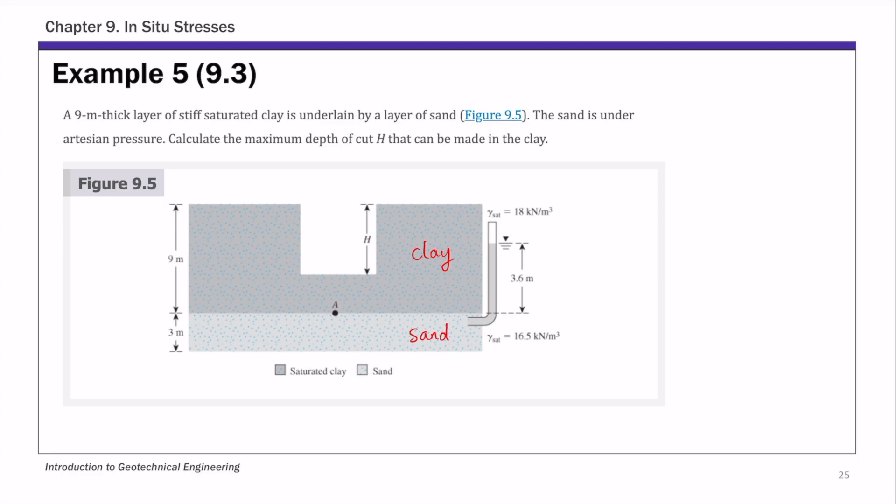And this is something we discussed in the past. The sand is under what we call artesian pressure, artesian condition. So you have basically an impermeable layer pressing a permeable layer. The pore pressure within that sand layer is going to be higher than hydrostatic pressure.